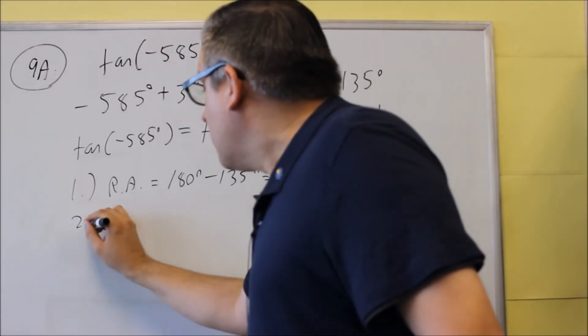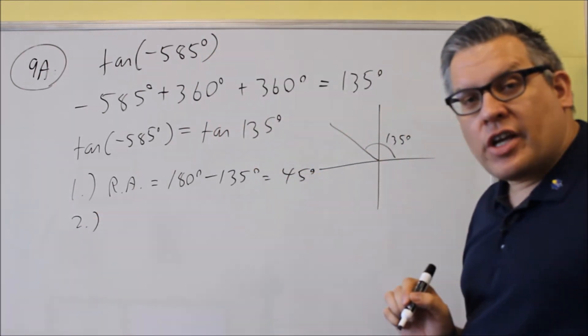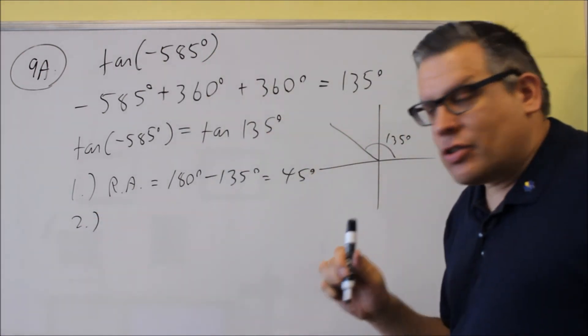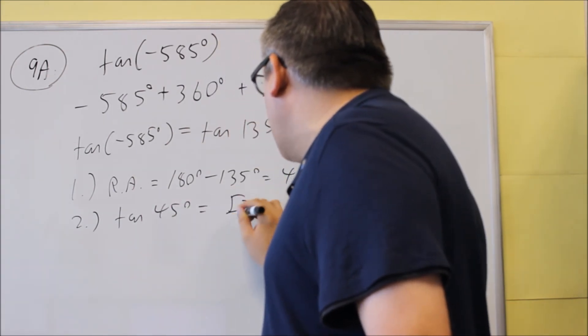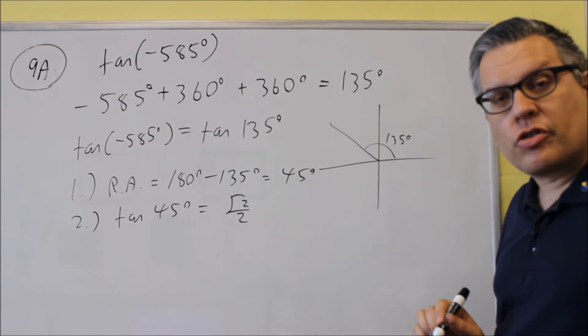Second step is you apply the trig function to the reference angle. The trig function is tangent this time, so we're going to do tangent 45 degrees, and from the table or the unit circle, we get square root of 2 over 2.